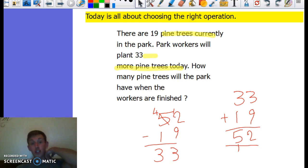We reviewed what operation we need to use. It said there are 19 pine trees currently in the park. Park workers will plant 33 more pine trees today. How many pine trees will the park have when the workers are finished? We found there's 19 pine trees and they're going to have 33 more, so we added 33 and 19, which gave us an answer of 52. Then I checked that by doing 52 take away 19, which gave me 33.